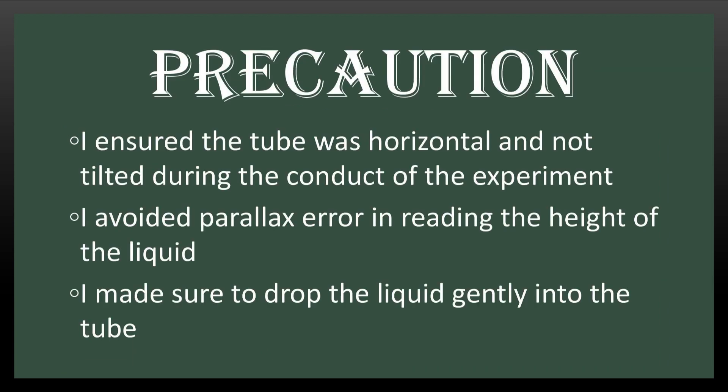In this experiment, we took certain precautions. First, you must avoid parallax error in reading the U-tube. The best U-tube to use is one that is calibrated, or you mount your meter rule steady across. Second, you must ensure that the U-tube was horizontal during the conduct of the experiment — if it is tilted, it will give you a wrong result. Third, you must ensure to drop the liquid gently into the tube and not pour it erratically.